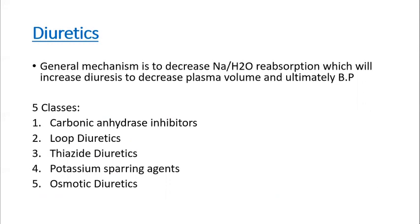Lastly, diuretics. The general mechanism is to decrease salt and water reabsorption, thereby increasing diuresis, decreasing plasma volume, and ultimately decreasing blood pressure. There are five classes: carbonic anhydrase inhibitors, loop diuretics, thiazide diuretics, potassium-sparing agents, and osmotic diuretics. We are going to discuss these in a separate video.